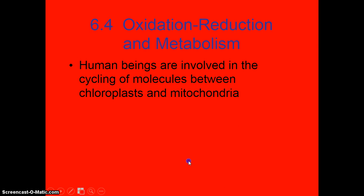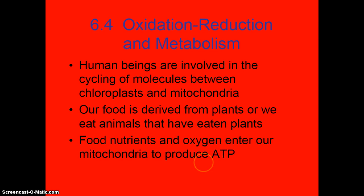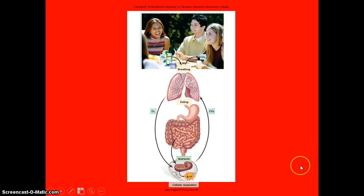Humans are involved in the cycling of molecules between the chloroplasts and the mitochondria. Our food is derived from the plants, or we eat animals that have eaten the plants, and that gets converted to ATP. There's a diagram showing you that. Happy people eating food.